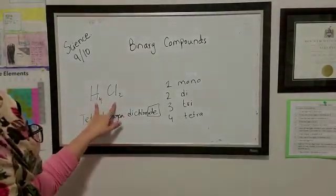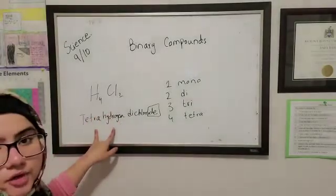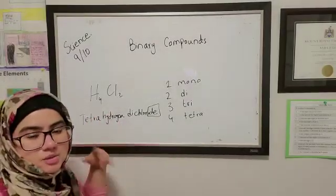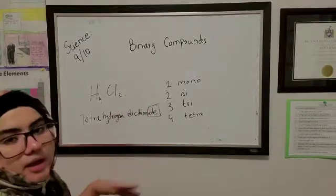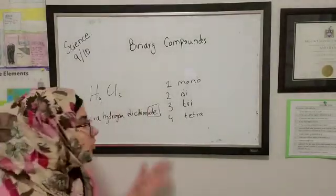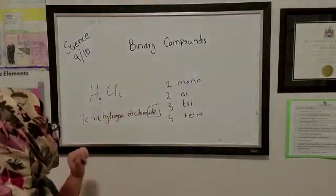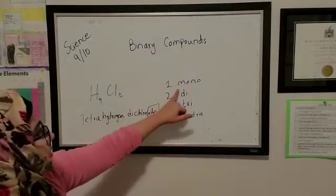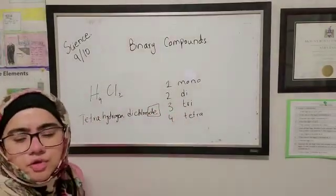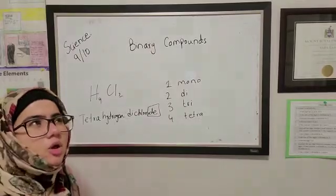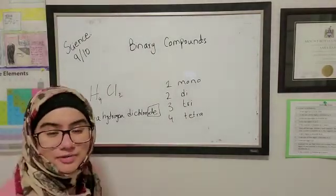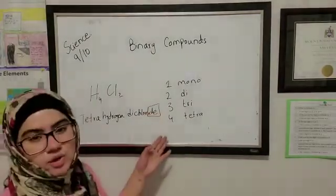Why binary? Because it's only two elements. That's why it's called binary compound. All right. So this is the way how you can name your binary compounds using these terms, mono, di, tri, tetra, and for five, I guess we call, I'm not sure. I'll look it up for you guys. So this is the way you name it.